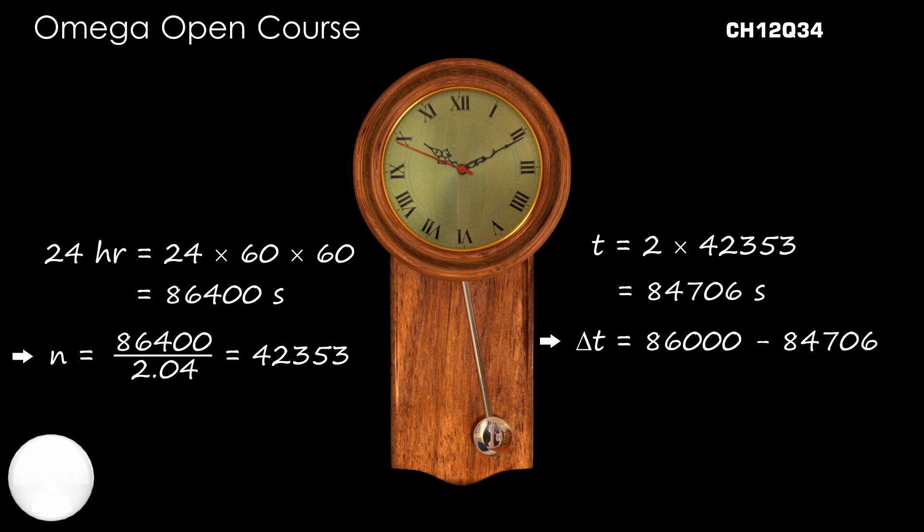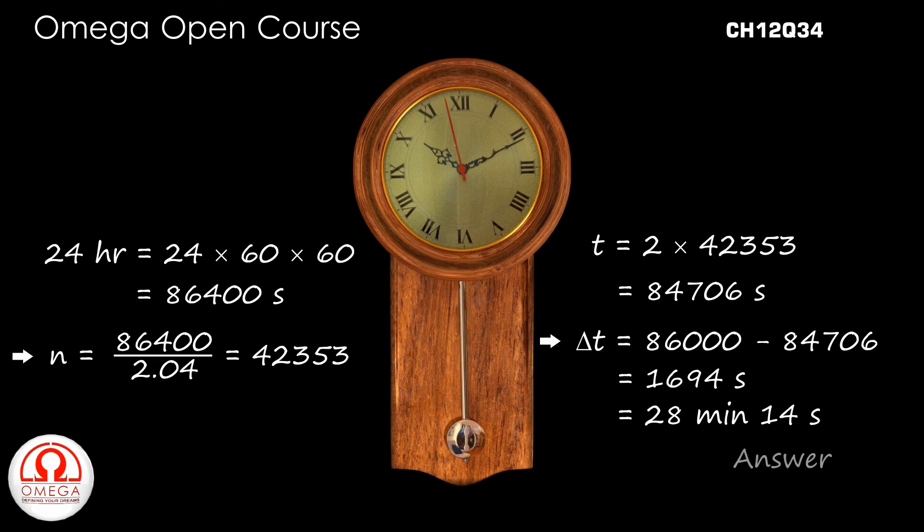Therefore, the clock slows down by 86400 minus 84706 or 1694 seconds, which is equal to 28 minutes and 14 seconds. This is our answer.